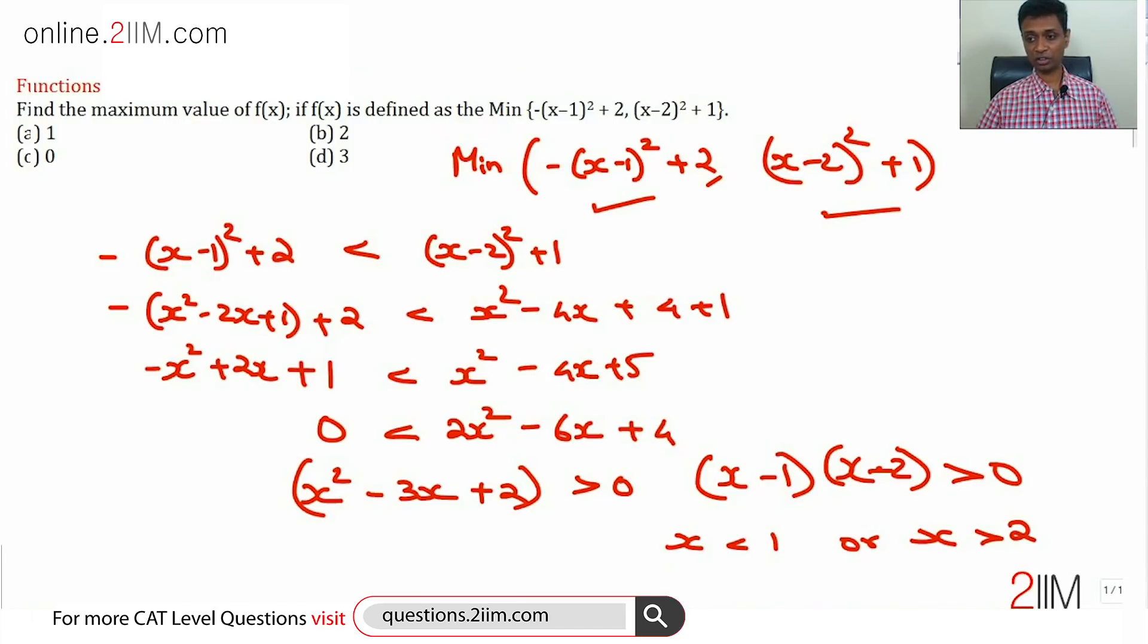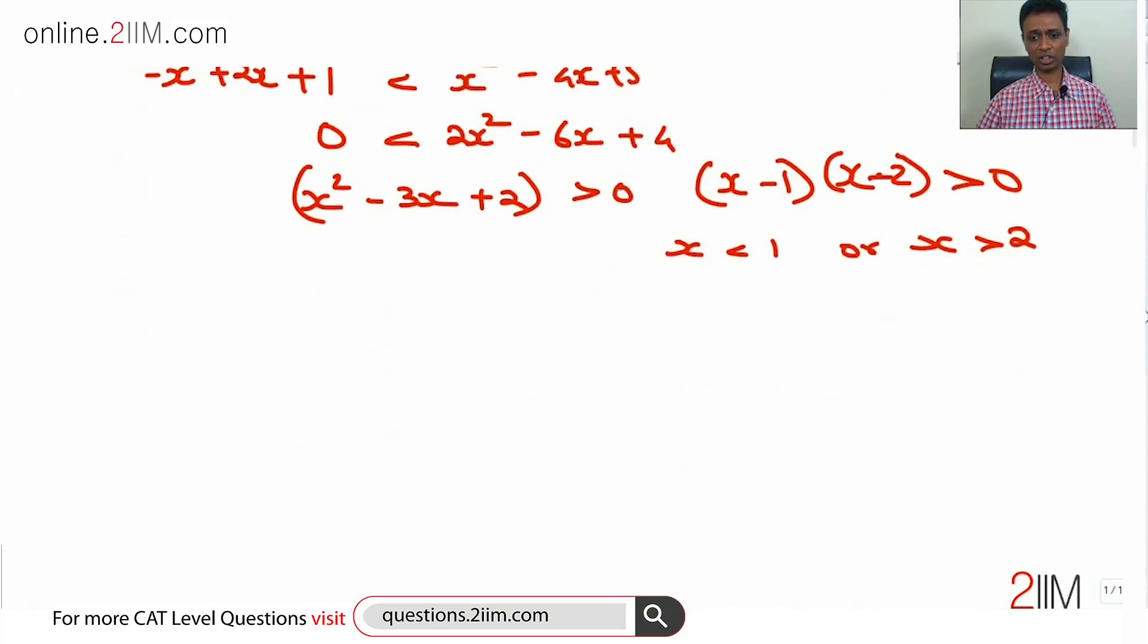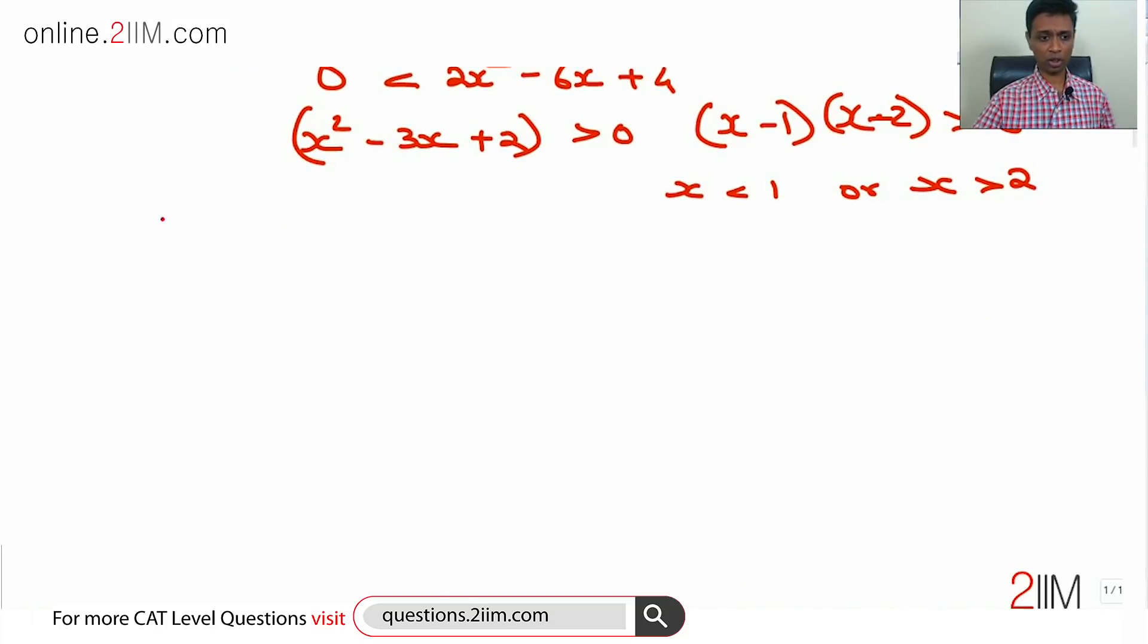Now I am going to define this function differently in three ranges. So the f(x) that we are looking for: when x is less than 1, this is -(x-1)² + 2. When x lies between 1 and 2, this is (x-2)² + 1.